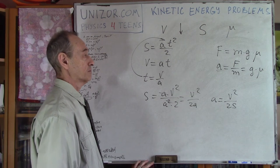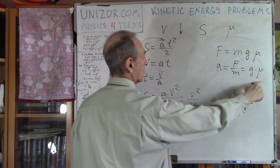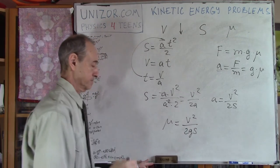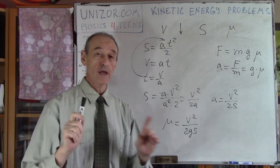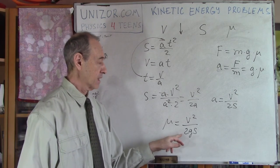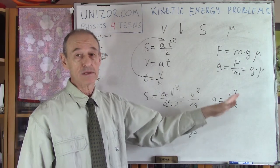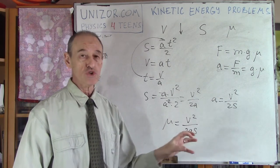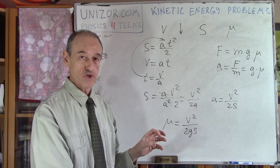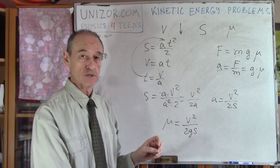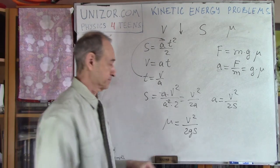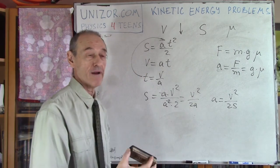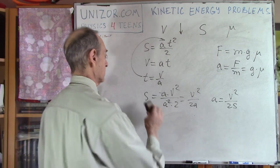We found a, so μ = a/g = v²/(2·g·s). That's the answer — that's our coefficient of friction. Notice something very important: it does not depend on the mass. Mass is unknown and doesn't matter. If you have the initial speed and the stopping distance, that's sufficient to find the coefficient of friction.